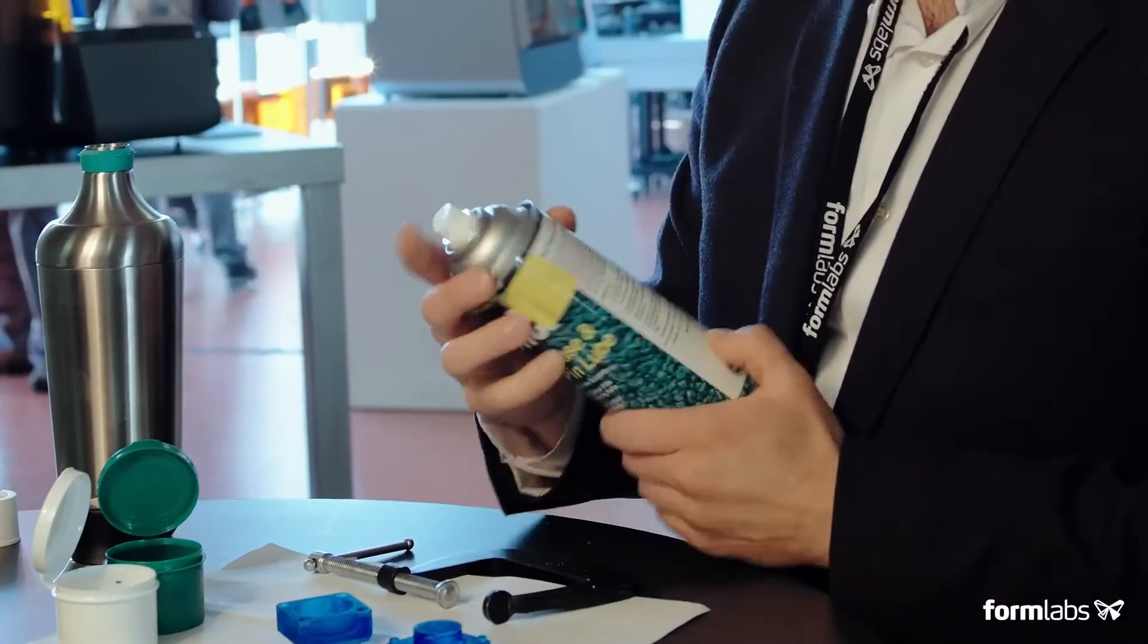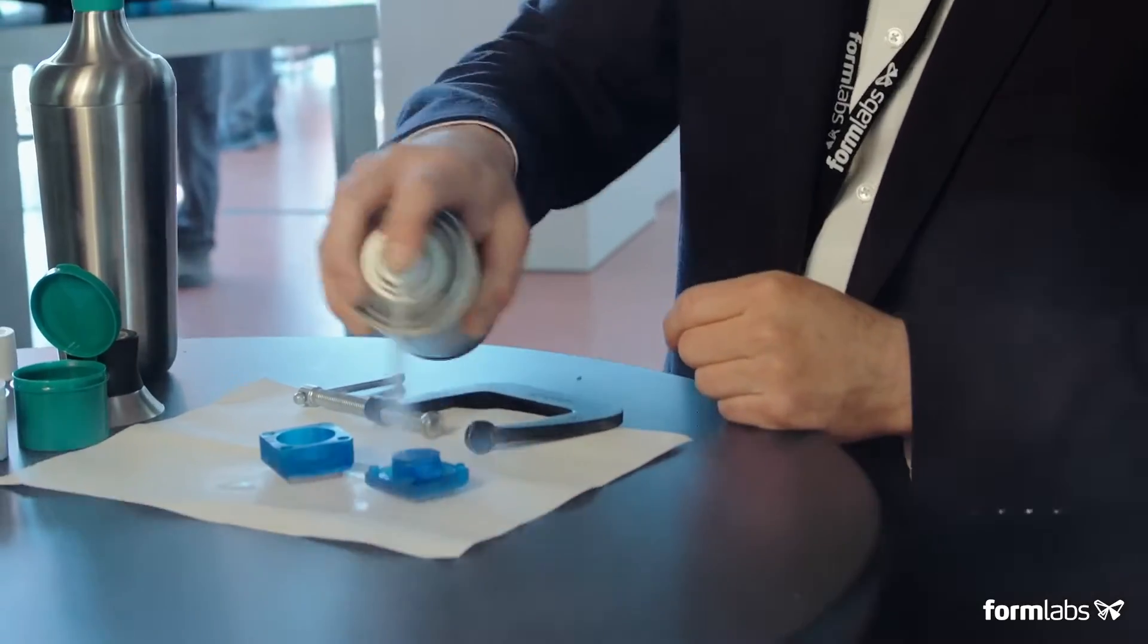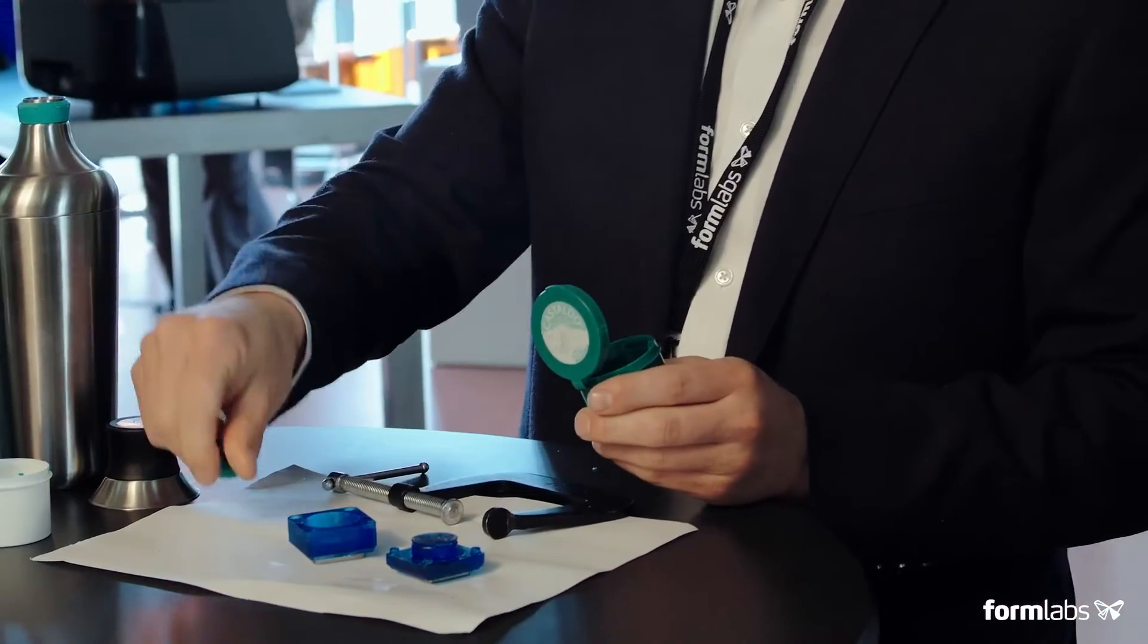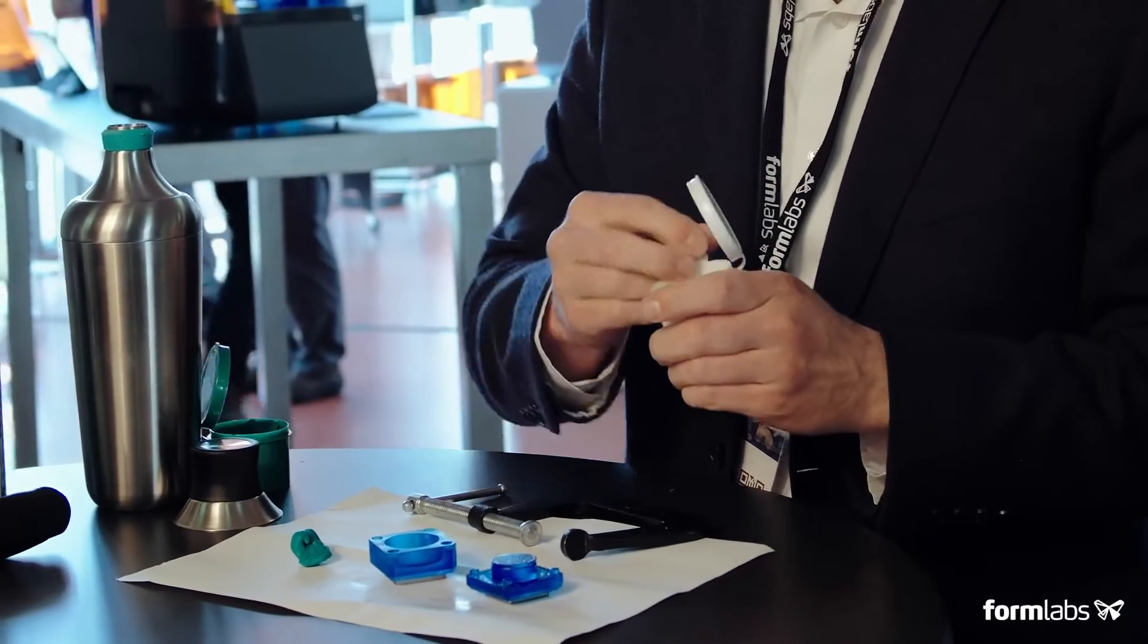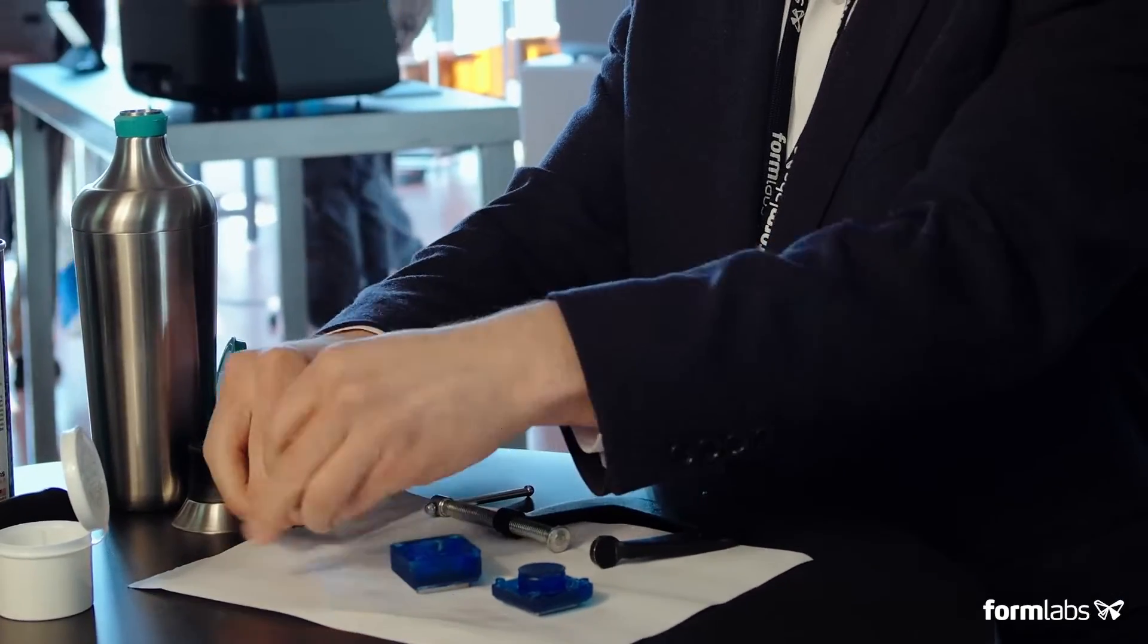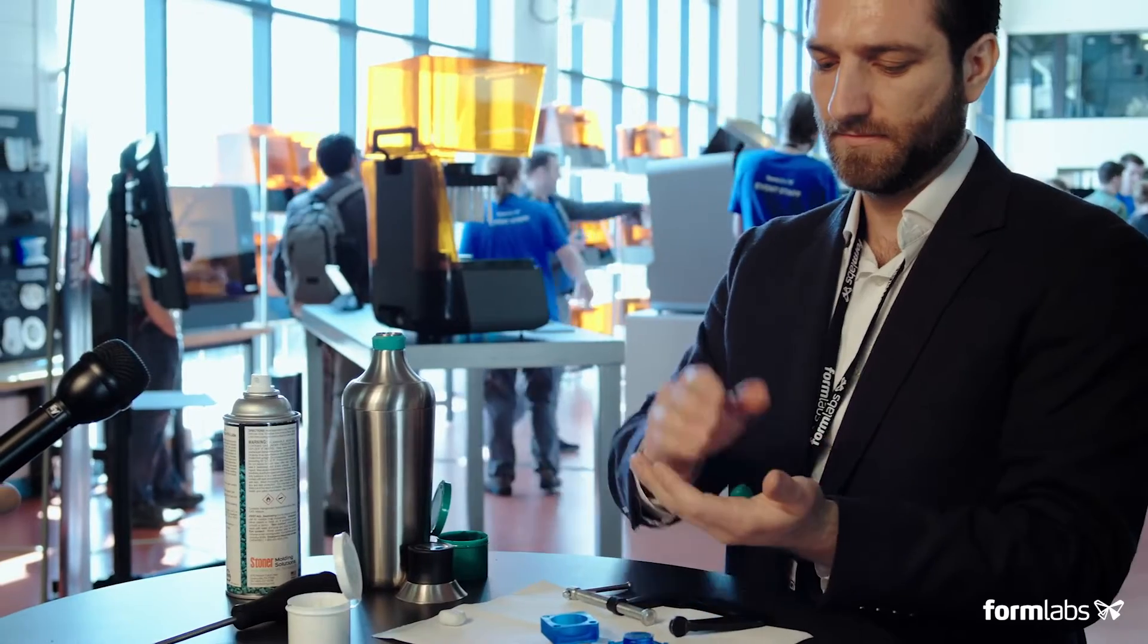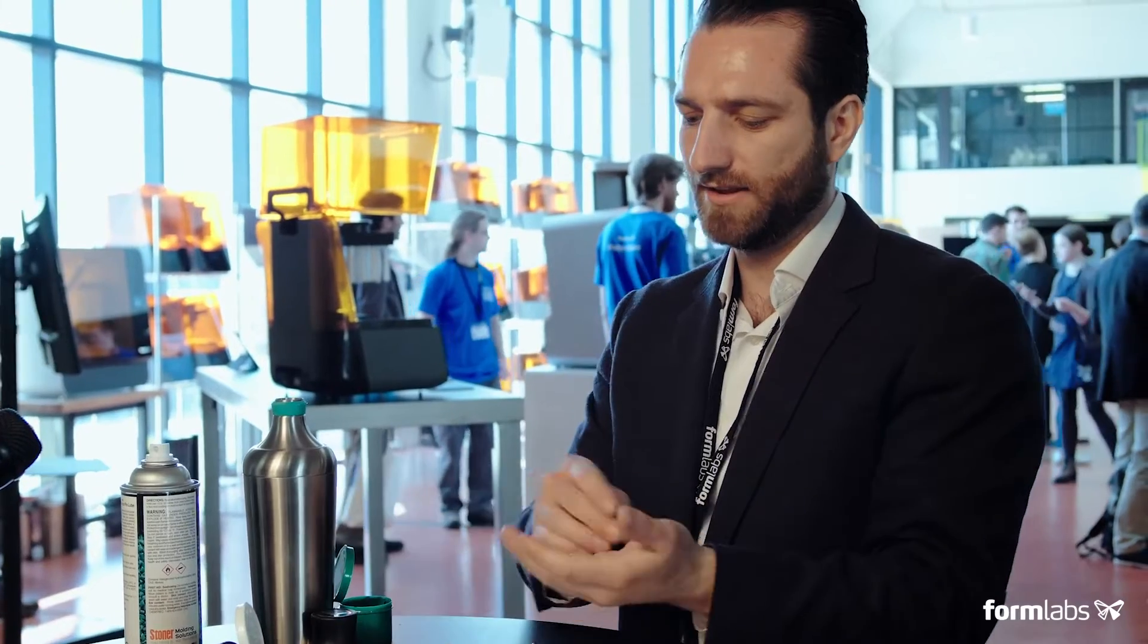Next you'll give the mold a little hit of mold release to make sure that the silicone doesn't stick to the mold and the silicone is mixed by volume so you don't need to be super particular about exactly how much you're using. You just want approximately the same amount of each and it's like an epoxy so when both parts come together it begins a chemical reaction that cures the material.